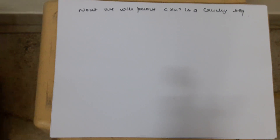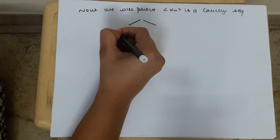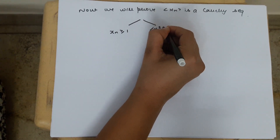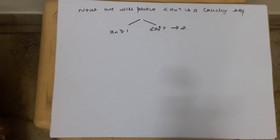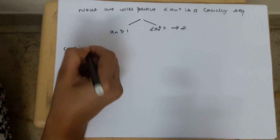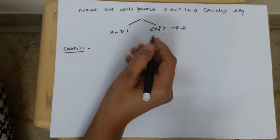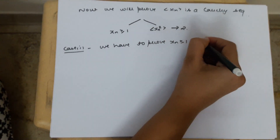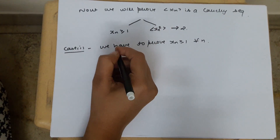Now we need to prove two things. First, that all Xn ≥ 1. Second, that the sequence Xn² converges to 2. We need to prove these two cases. Starting with the first case — we have to prove that Xn ≥ 1 for all n belonging to Z⁺.